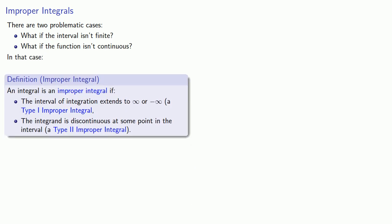First, the interval of the integration might extend to plus or minus infinity, and we call this a type 1 improper integral. Or the integrand may be discontinuous at some point in the interval, and this would be a type 2 improper integral.